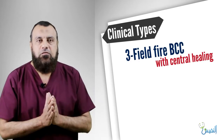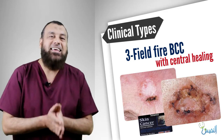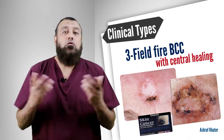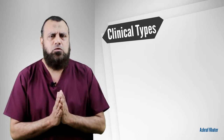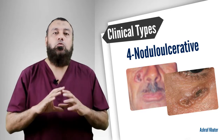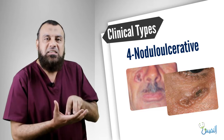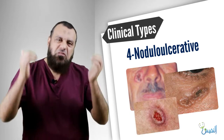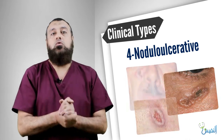The third type is the field fire type. The fourth type, taking 13–20 years to develop, is the nodular ulcerative type. This type starts to produce basal induration — the base is indurated and the edges are rolled-in, raised, inverted edges with an indurated base. This is the classic basal cell carcinoma ulcer — the nodular ulcerative type.